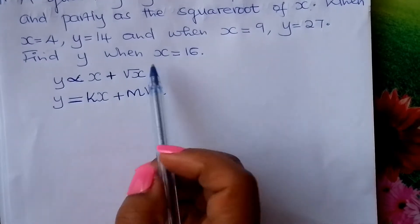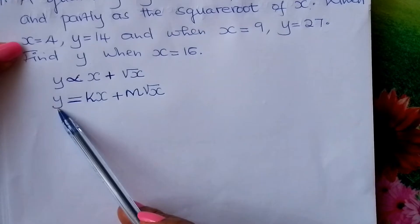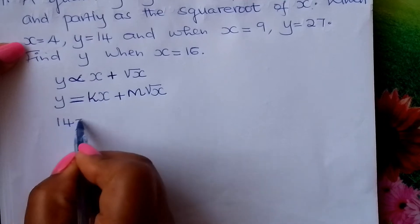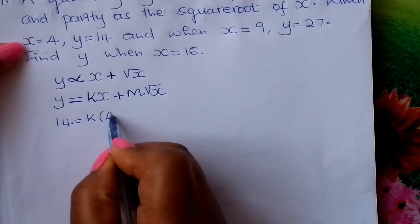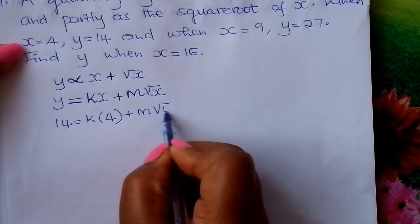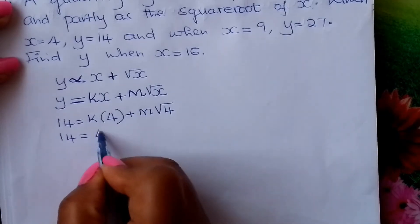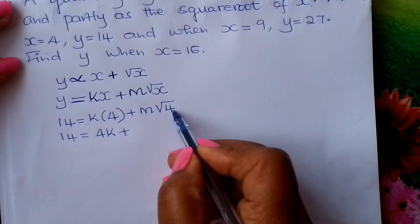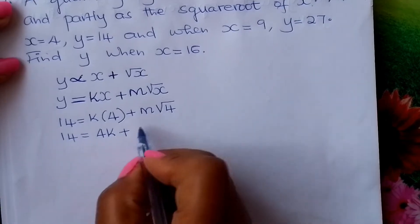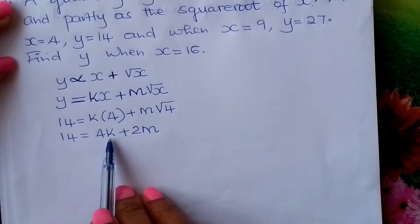From here, we go to the second sentence: when X is 4, Y is 14. We substitute: 14 equals K times 4, plus M times the square root of 4. This gives us 14 equals 4K plus 2M.